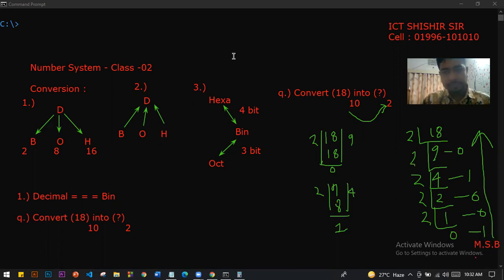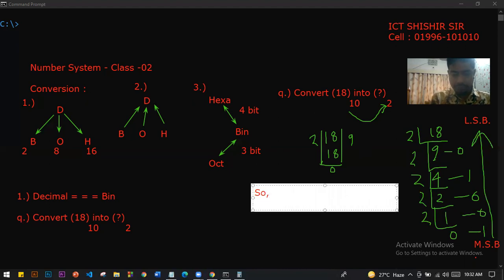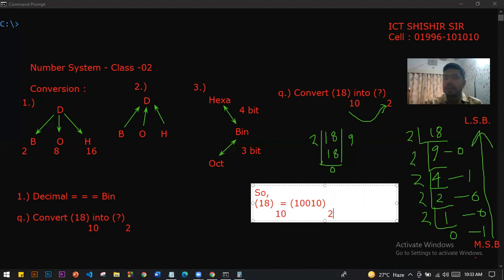So we can write this starting from MSB - Most Significant Bit. The answer is 18 base 10 converts to 10010 base 2. Decimal to binary conversion.